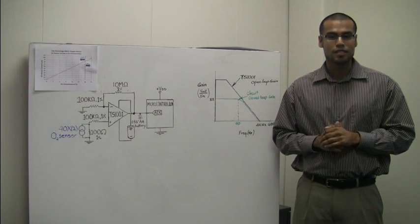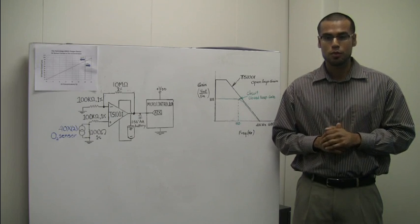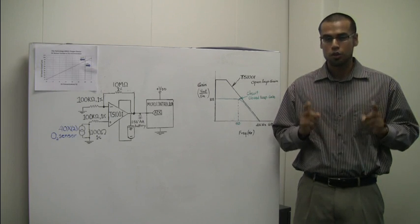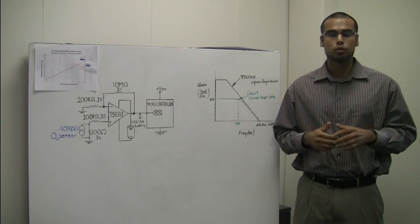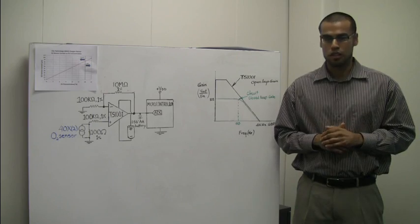However, we can address this by utilizing a single TS-1001 operational amplifier to create a 1.5-volt-powered oxygen sensor signal conditioning circuit that can predict with precision ambient oxygen levels.